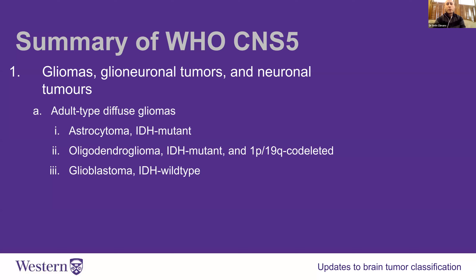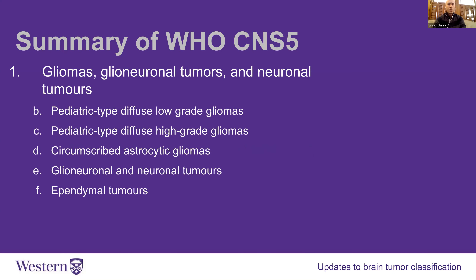Importantly, in this new definition, if you do not have an IDH mutation, you no longer have an astrocytoma. Similarly, if you do not have an IDH mutation, you no longer have an oligodendroglioma — you'll have to fit into another category. This means a lot of people who have been told they had an astrocytoma actually, under the new classification system, no longer do.